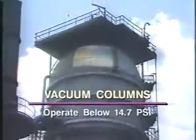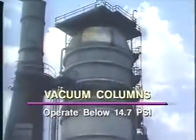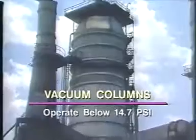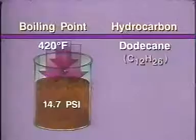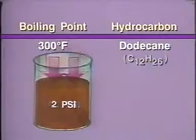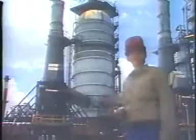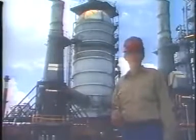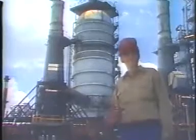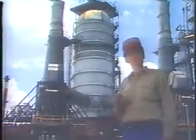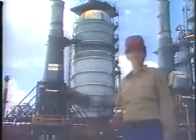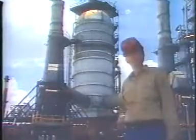And finally, there are columns that operate below atmospheric pressure in a partial vacuum. Towers that operate below atmospheric pressure are called vacuum columns. When we reduce the pressure on a liquid, it boils at a lower temperature. Vacuum columns reduce the amount of heat needed to vaporize hydrocarbons because they operate at very low pressures. Vacuum columns are generally used to distill very heavy compounds that have very high boiling point temperatures. If we distilled these compounds at atmospheric pressure, we'd need to use an excessive amount of heat to vaporize the large molecules. These high temperatures could change the structure of some of these molecules, thus changing their characteristics.